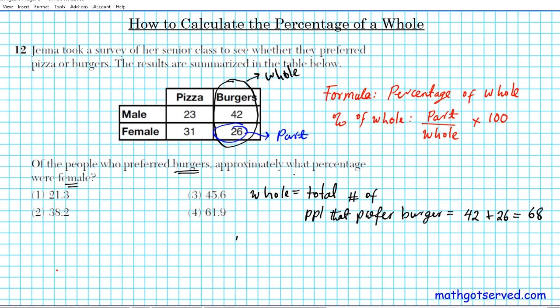In this problem, the part is given by the number of females that preferred burgers. So what is that value? It's 26. So this is our part and 68 is basically our whole. It looks like we have everything that we need to solve our problem. We just need one unknown, the percentage of whole.